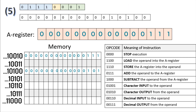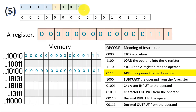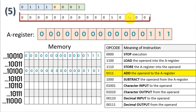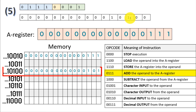The next instruction is 0111. We've seen this before — we simply have to add the operand to the A register. Because this is direct mode addressing, we know to go to this memory location, retrieve the value at this memory location, and add it to the A register.